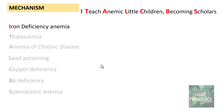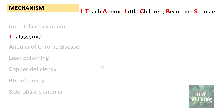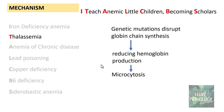Let's look at the basic mechanism of each cause. In iron deficiency anemia, there is inadequate iron supply which hampers hemoglobin production, leading to microcytic hypochromic red blood cells. In thalassemia, genetic mutations disrupt globin chain synthesis, thereby reducing hemoglobin production — that is the reason for microcytosis in various thalassemias.